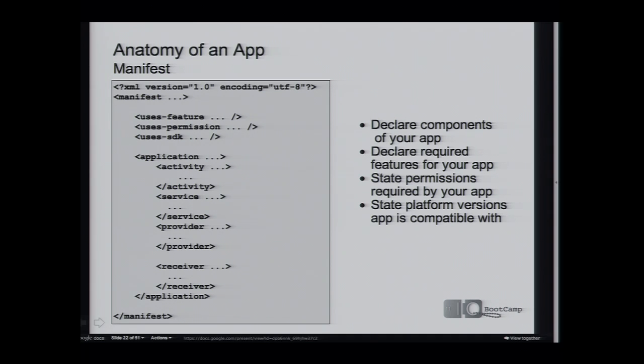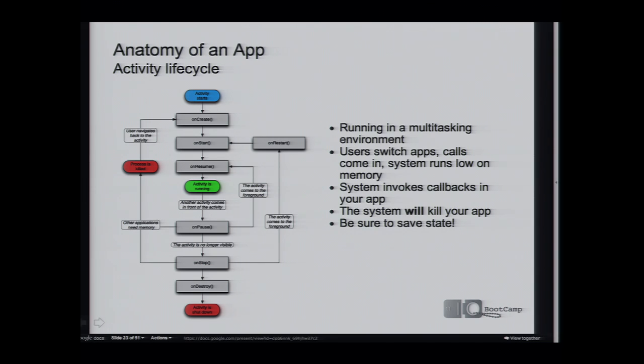You can also state what versions of the Android system you require. More interestingly, you can say the lowest version you require while also targeting a higher version. So you set a target SDK of the latest — say Gingerbread — but declare compatibility all the way back to, say, Cupcake. By doing this, you're completing a contract saying you won't use newer APIs when running on an older version. It's also important to remember you're running on a multitasking environment — mobile phones and tablets are memory-constrained, and users will switch between applications all the time.